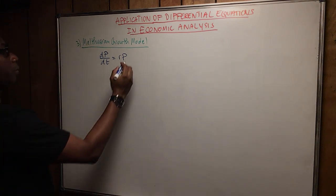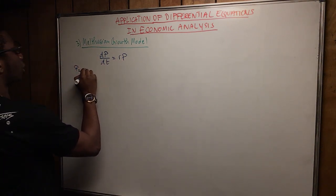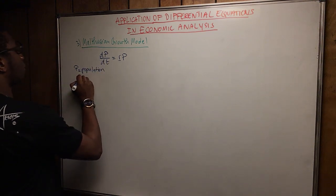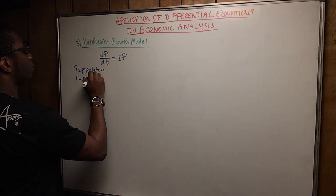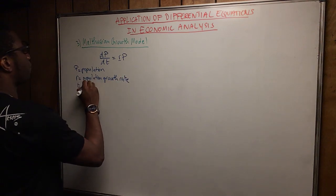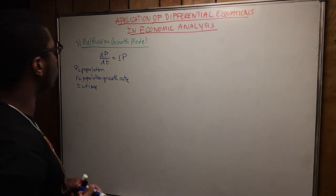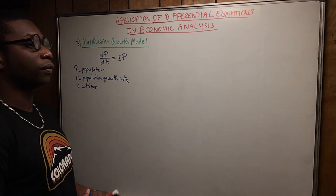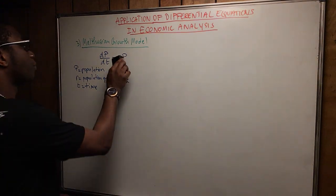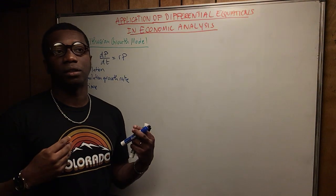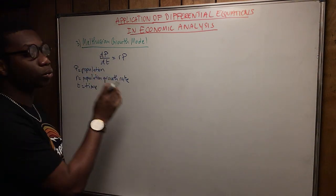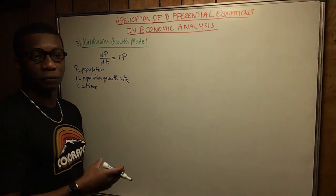Here, p is population size, r is the population growth rate, and t is time. Don't forget that differential equations attempt to solve how a system evolves with respect to time. So how are we going to solve this differential equation? We're going to apply the separable variables method.